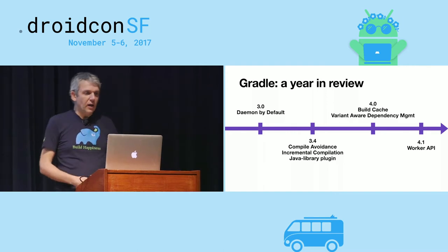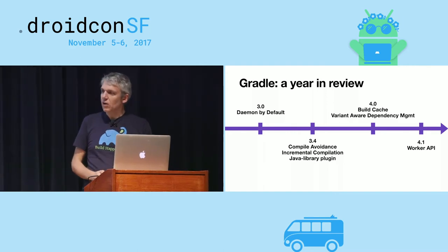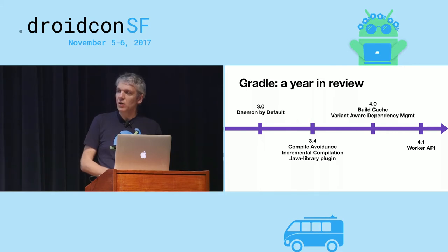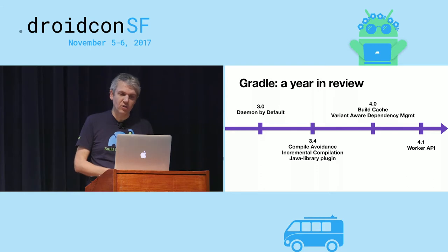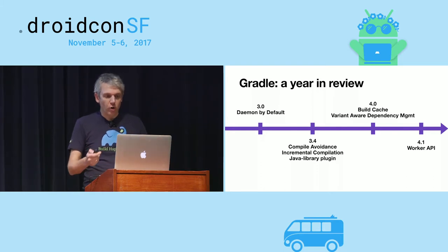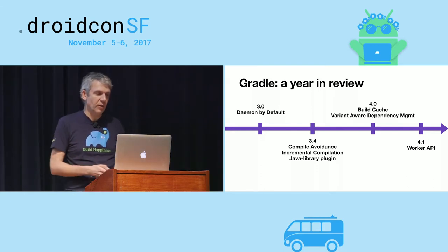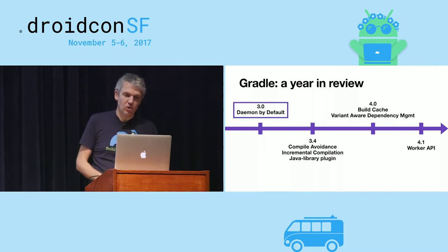Looking back a little more than a year: in Gradle 3.0, the daemon was enabled by default. In 3.4, we introduced compile avoidance and incremental compilation. In 4.0, the build cache. And in 4.1, the Worker API. Let's look in more detail at the effects of those features.